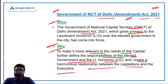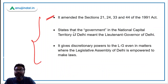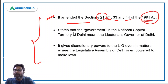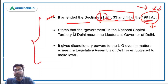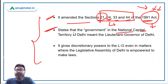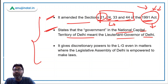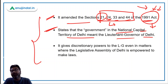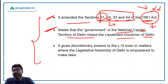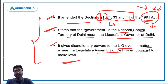This is the Government of NCT of Delhi Amendment Act 2021. The Lieutenant Governor and legislature means the elected government. Talking about the other important features of this act, it amended sections 21, 24, 33 and 44 of the 1991 Act. Remember, this amendment act amends the provisions of the 1991 Act. This act states that the government in the National Capital Territory of Delhi means the Lieutenant Governor of Delhi.